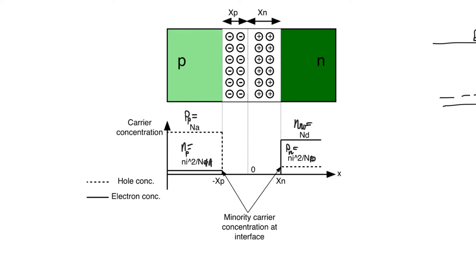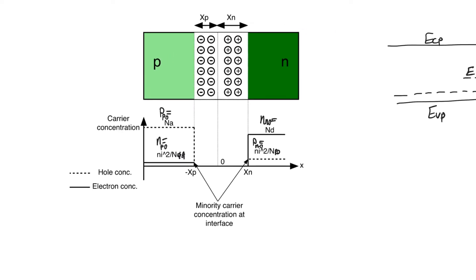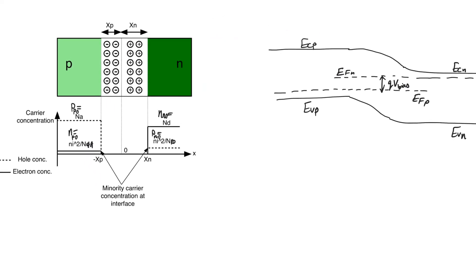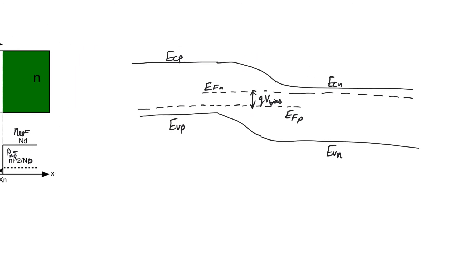We can also use 'nought' to indicate that these are the equilibrium levels. So what happens to these equilibrium levels of charge carriers when we apply a forward voltage? When we apply a forward voltage, the amount of forward potential appears as a difference in the Fermi level between the two sides of the p-n junction.